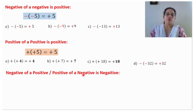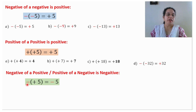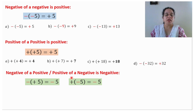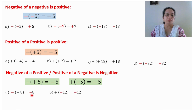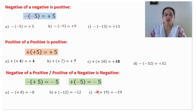Negative of a positive, or positive of a negative, is negative. If any one sign is negative, your answer will be negative. Like this: negative of a positive 5 will be negative. Or positive of a negative — any one sign is negative — then your answer will be negative. Negative of a positive 8: any one sign is negative, answer will be negative 8. Positive of a negative 12: any one sign is negative, answer will be negative 12. Negative of a positive 19: answer will be negative 19. Positive of a negative 11: answer will be negative 11.